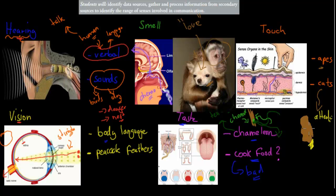I'm more of a dog person, but cats are okay. This dot point just says gather and process information from secondary sources to identify a range of senses involved in communication. So know your five senses and know examples of how we could use those for communication. I mentioned quite a few here, but just know at least one example for each sense and you should be all good. I hope that was useful. Thank you.